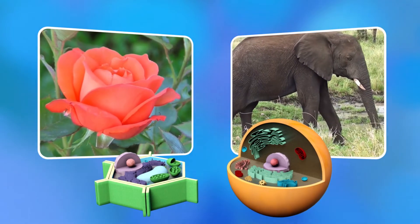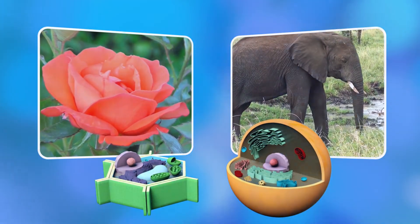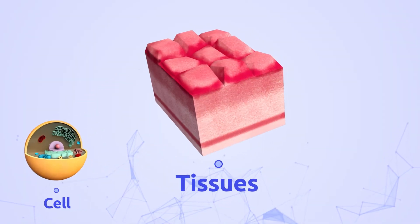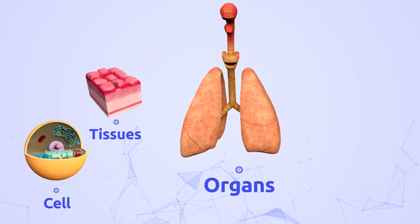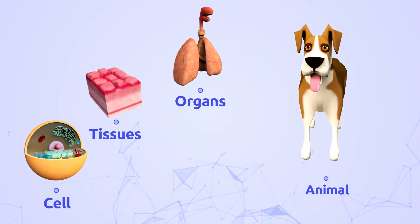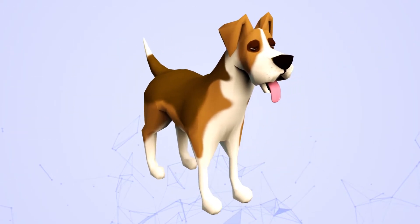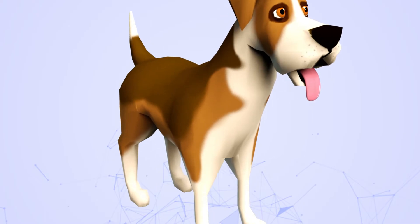Eukaryotic cells can be plant cells or animal cells. Animal cells make up tissues, and these make up animal and human body organs. Each cell has a specific function depending on which organ system it belongs to.